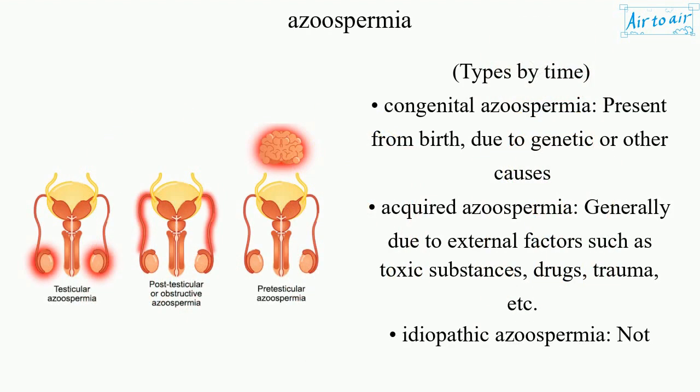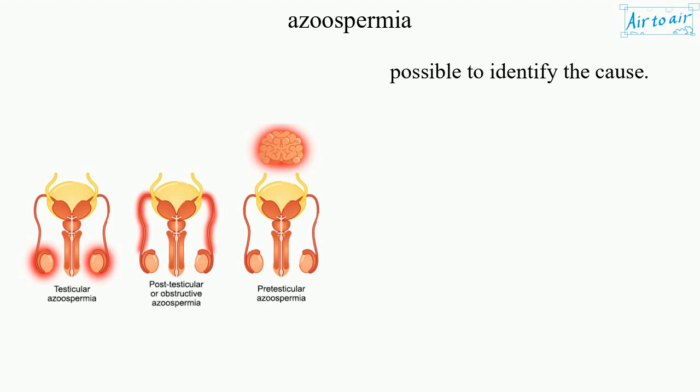Types by time: Congenital azoospermia is present from birth, due to genetic or other causes. Acquired azoospermia is generally due to external factors such as toxic substances, drugs, trauma, etc. Idiopathic azoospermia is a type where it is not possible to identify the cause.